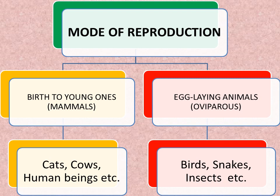The second mode of reproduction is egg-laying animals. The egg-laying animals are called oviparous animals. Examples: birds, snakes, insects, etc. So these are the two ways by which the reproduction process can occur.